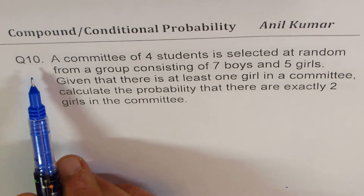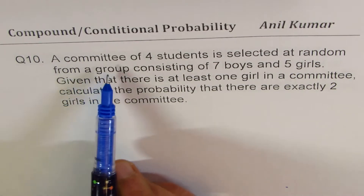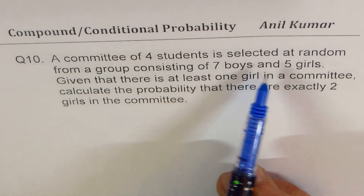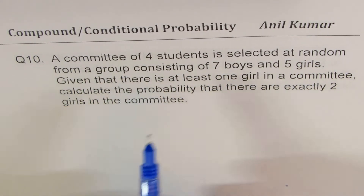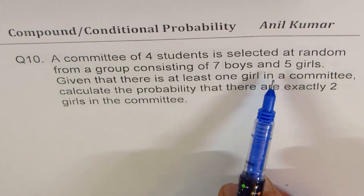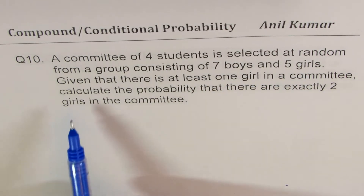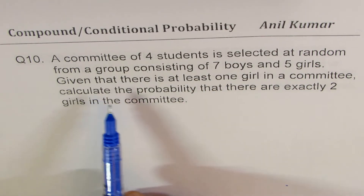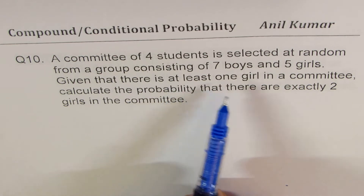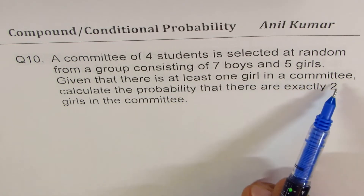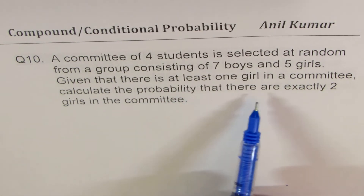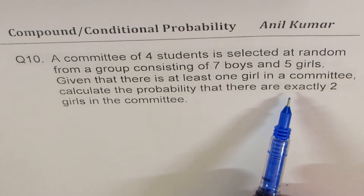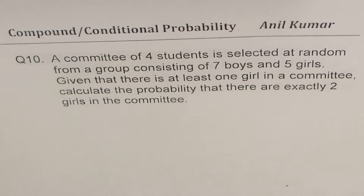Question number 10. A committee of four students is selected at random from a group consisting of seven boys and five girls. Given that there is at least one girl in the committee, calculate the probability that there are exactly two girls in the committee.